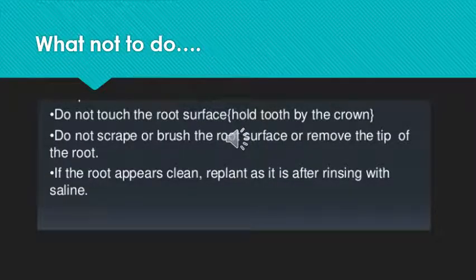But while doing so, what are you not supposed to do? What are the precautions you are supposed to take? Never ever touch the root surface — only hold the tooth by the crown. The crown refers to the white colored portion which is visible outside in the oral cavity, whereas the root is the invisible portion which is attached to the bone. You are not supposed to touch the root surface because it will still have some living tissues and cells attached to it. Never ever try to scrape or brush the root surface or remove the tip of the root. If the root appears clean enough, try re-implanting the tooth into the socket; otherwise, just bring it to the dental office, because the necessary steps will be taken care of by the dentist.